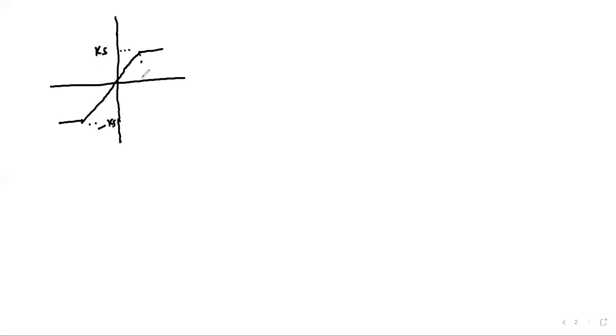We draw the non-linearity as follows: a linear relationship that then remains constant. So this is ks and this is negative ks; this is s and this is negative s on the input axis. This is our input and our output.